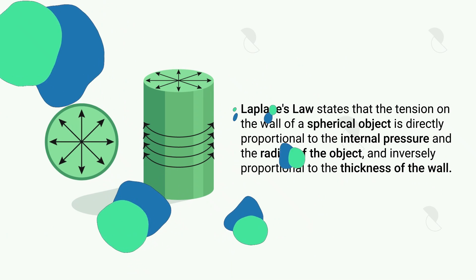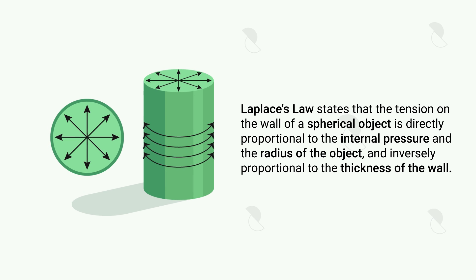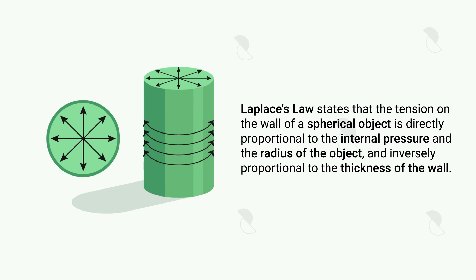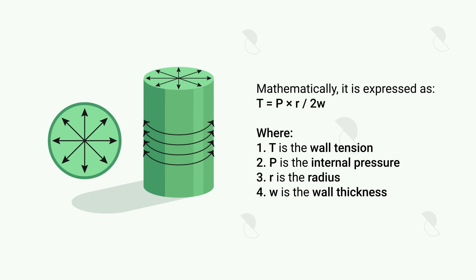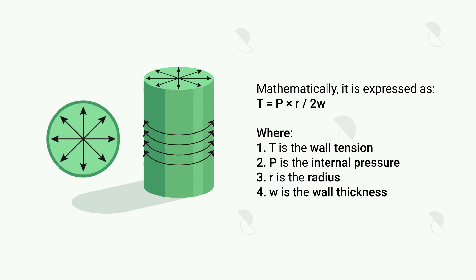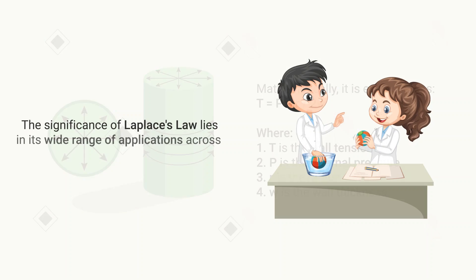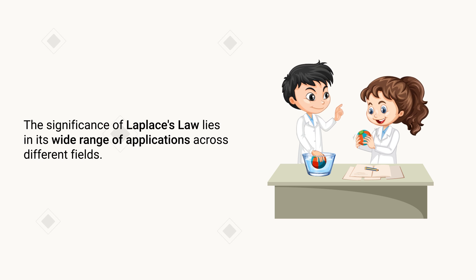In its simplest form, Laplace's law states that the tension on the wall of a spherical object is directly proportional to the internal pressure and the radius of the object, and adversely proportional to the thickness of the wall. Mathematically, it is expressed as the following: where T is the wall tension, P is the internal pressure, R is the radius, and W is the wall thickness.